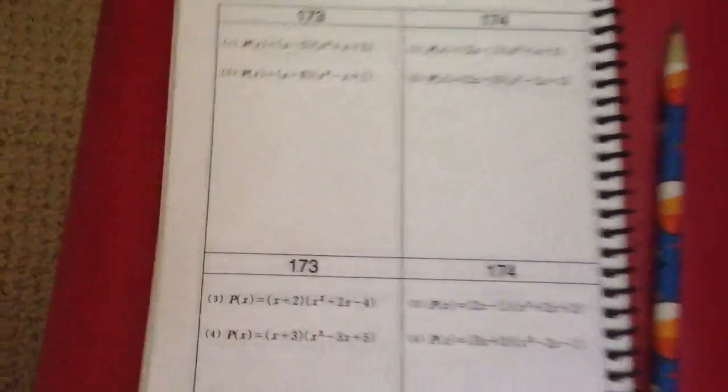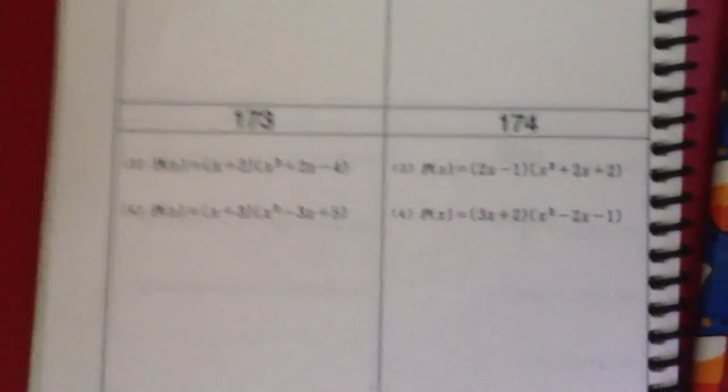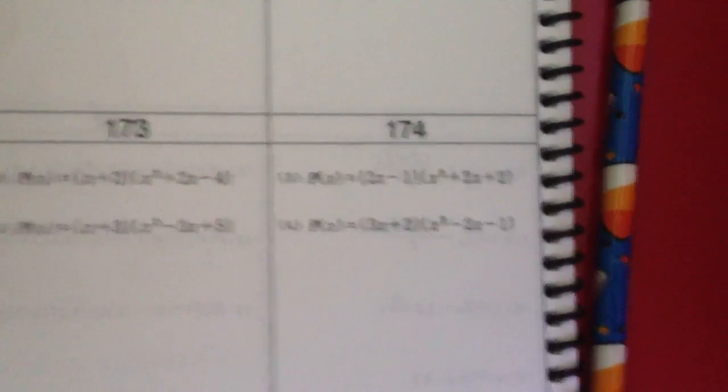What did you get? 3x plus 2. 174. Problem number 4. x squared minus 2x minus 1. Excellent, Ken.